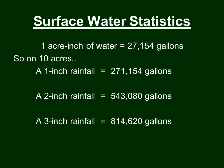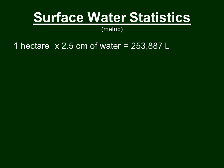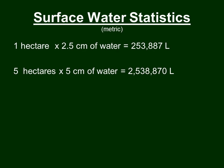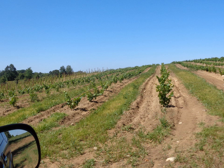That amount of water can certainly do a lot of damage. Looking at metric statistics: one hectare times 2.5 centimeters, which is an inch, is 253,000 liters. Five hectares times a five-centimeter rain, or two inches, is two and a half million liters of water falling on the ground. If you're not prepared to deal with that water, some very nasty things can happen.